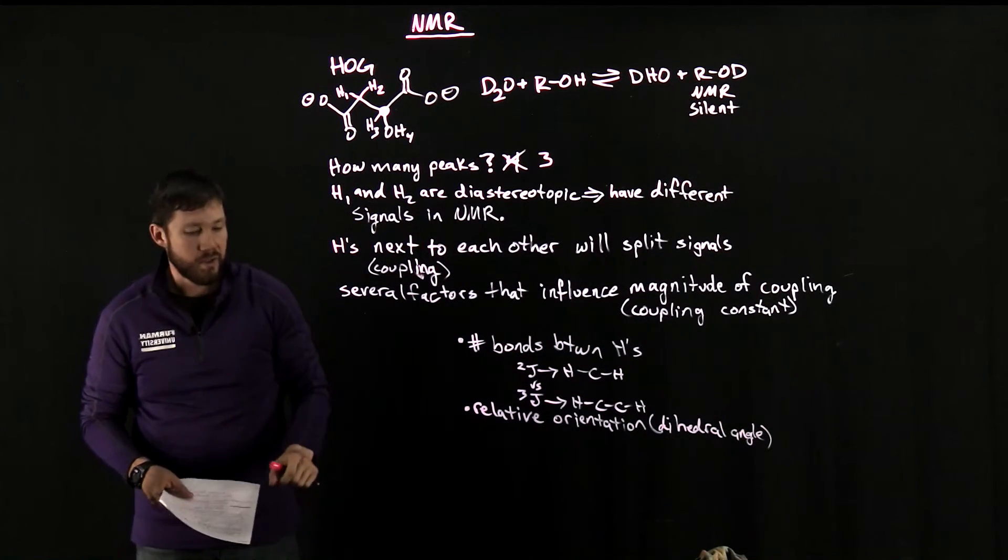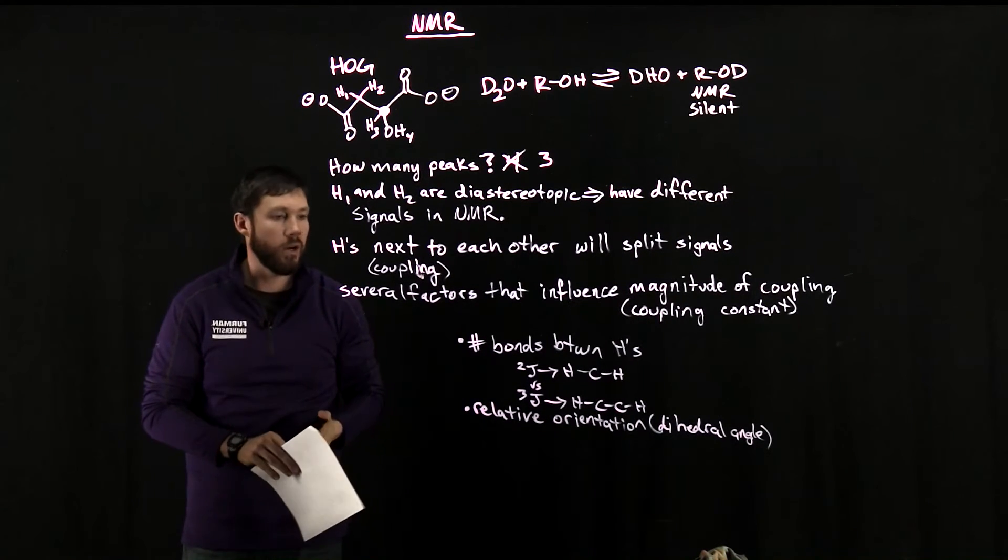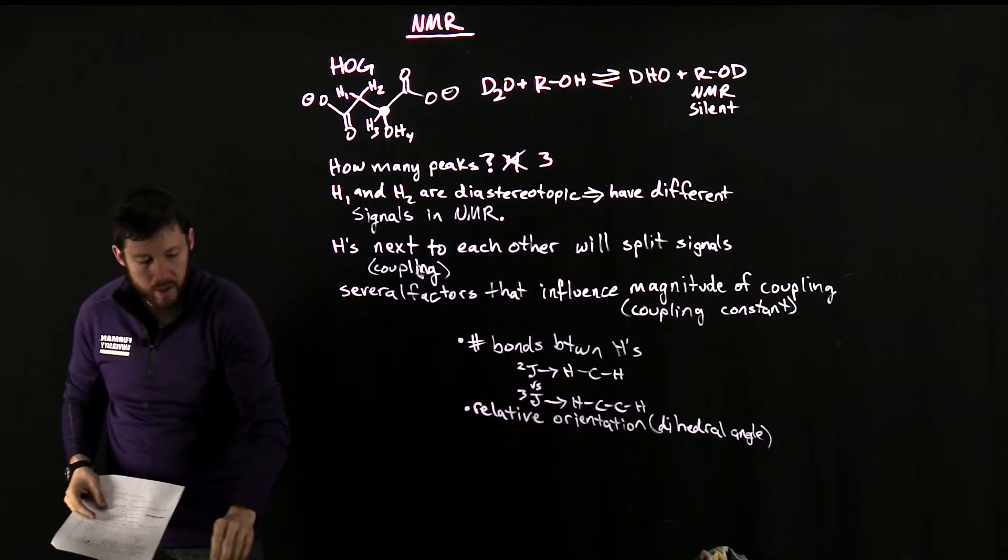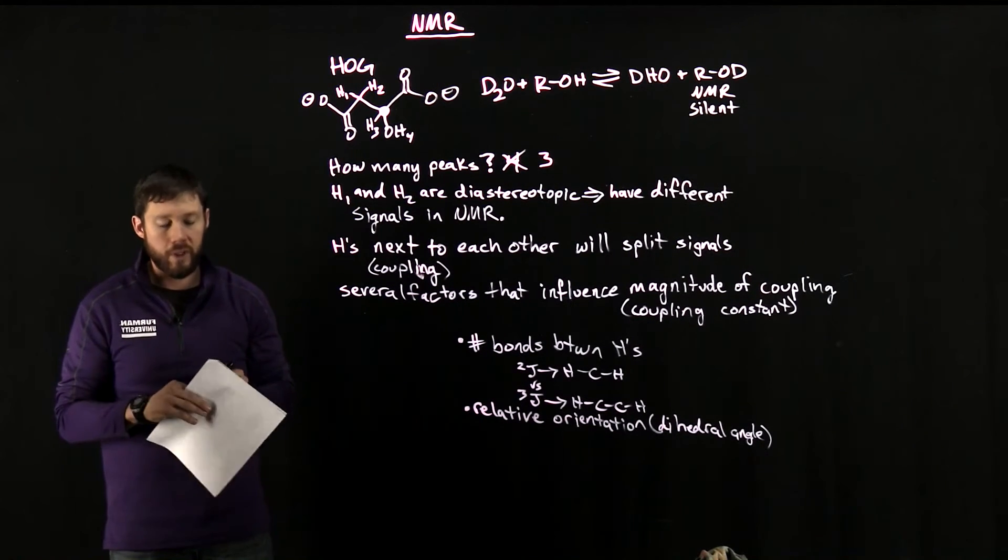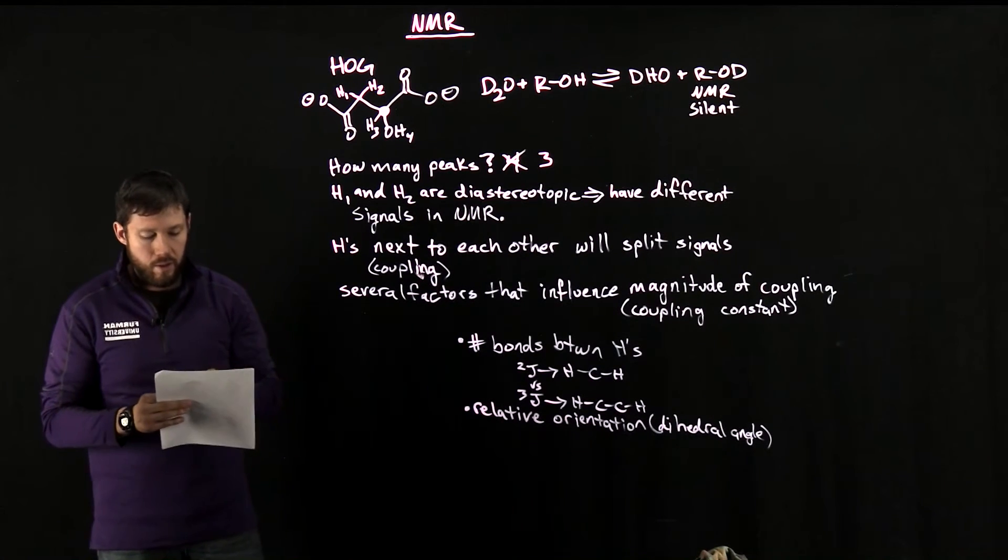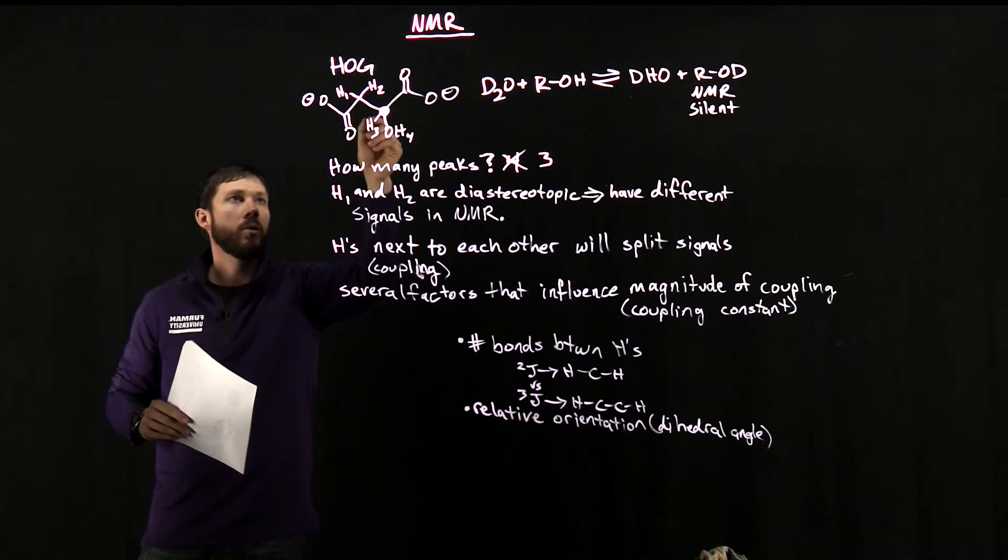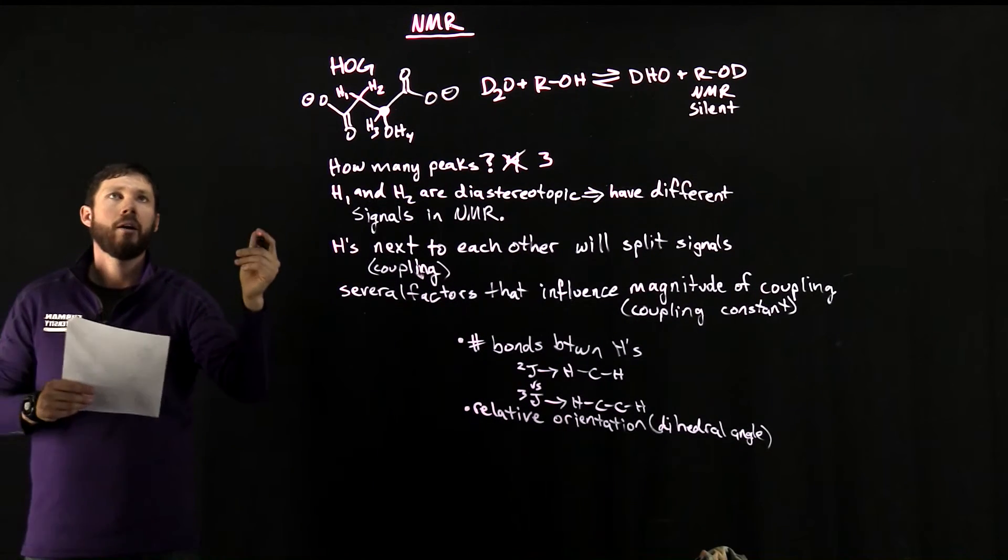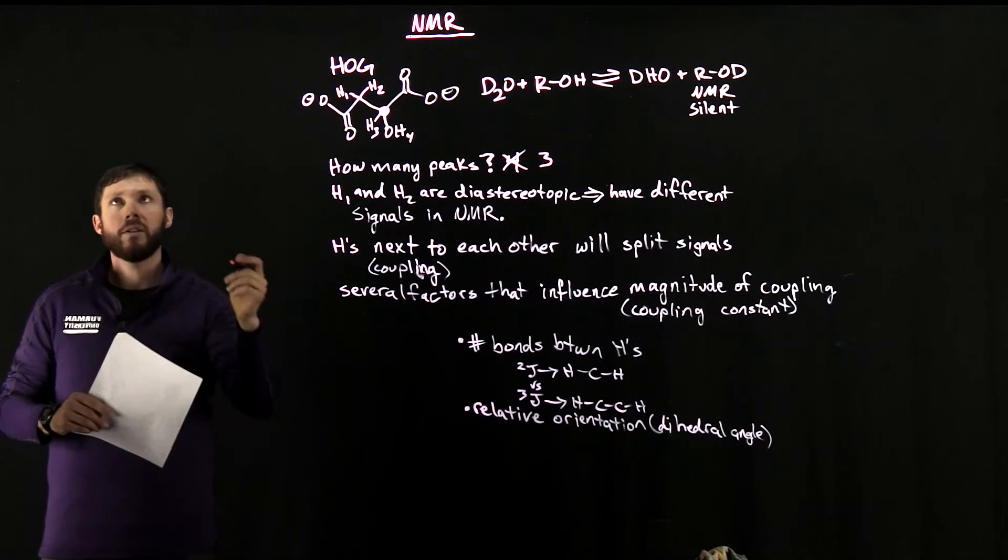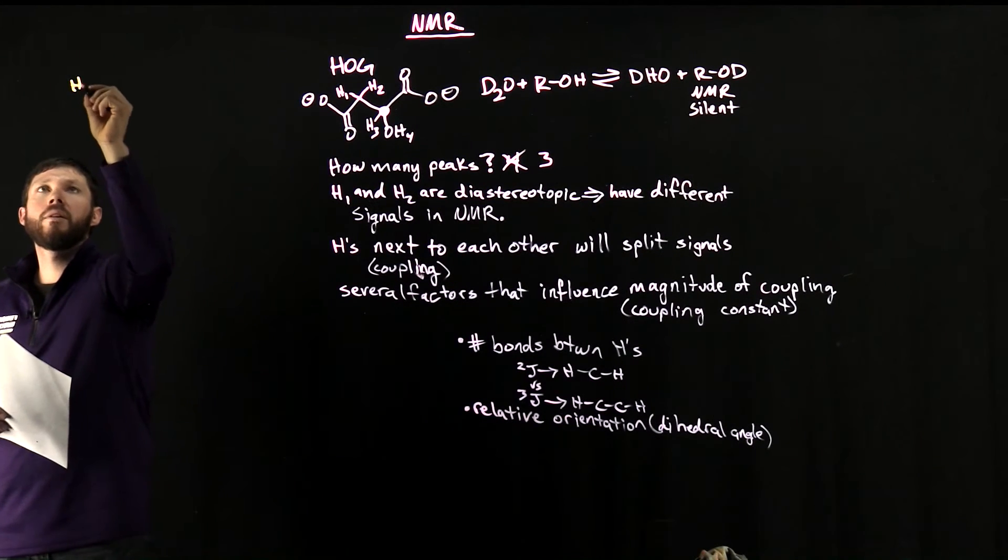So we've got a couple things to consider when trying to anticipate how many peaks we should see in our NMR spectrum. So I think we've got enough information where we can start to put this into practice and try to get an idea of what we would expect. So we're going to go through and look at each of these protons at a time and figure out what their splitting pattern might be, to indicate how many peaks we might expect to see. So we'll start with H1.